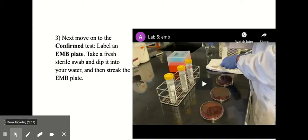So next we move on to the confirmed test, which is the EMB plates. And those are also testing for coliforms. But remember, they can be even a little more specific than the presumptive test in that they can distinguish between general coliforms and E. coli, because E.